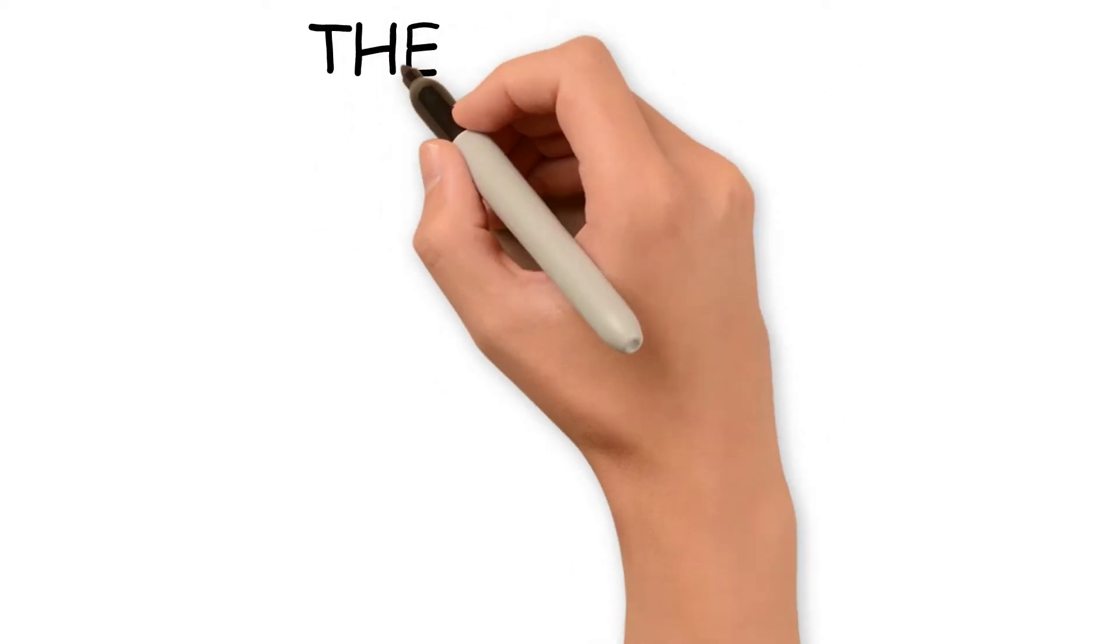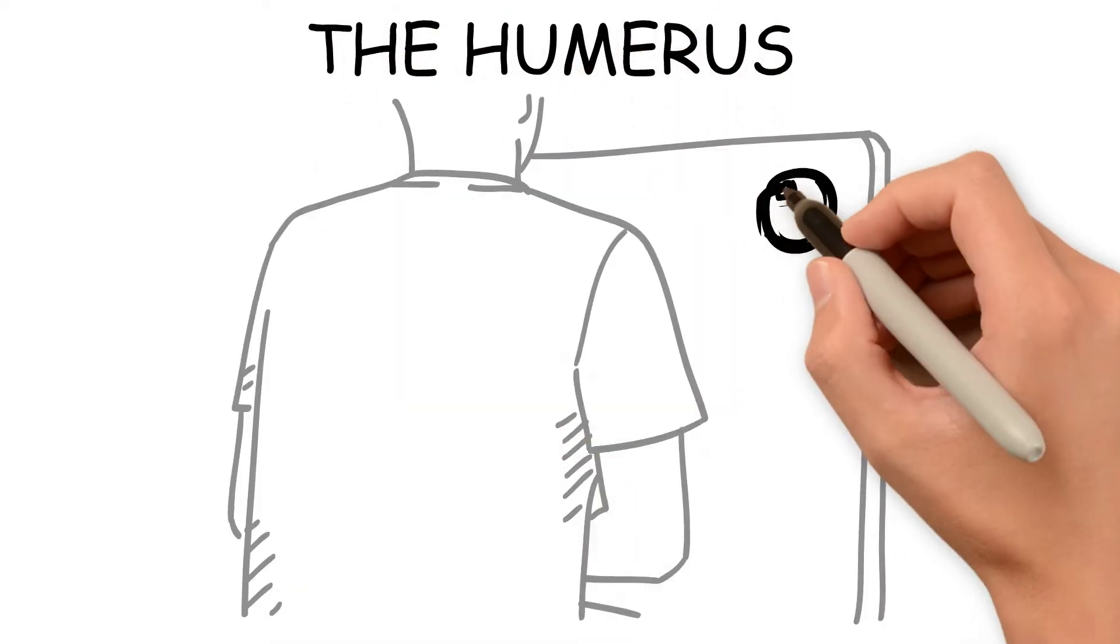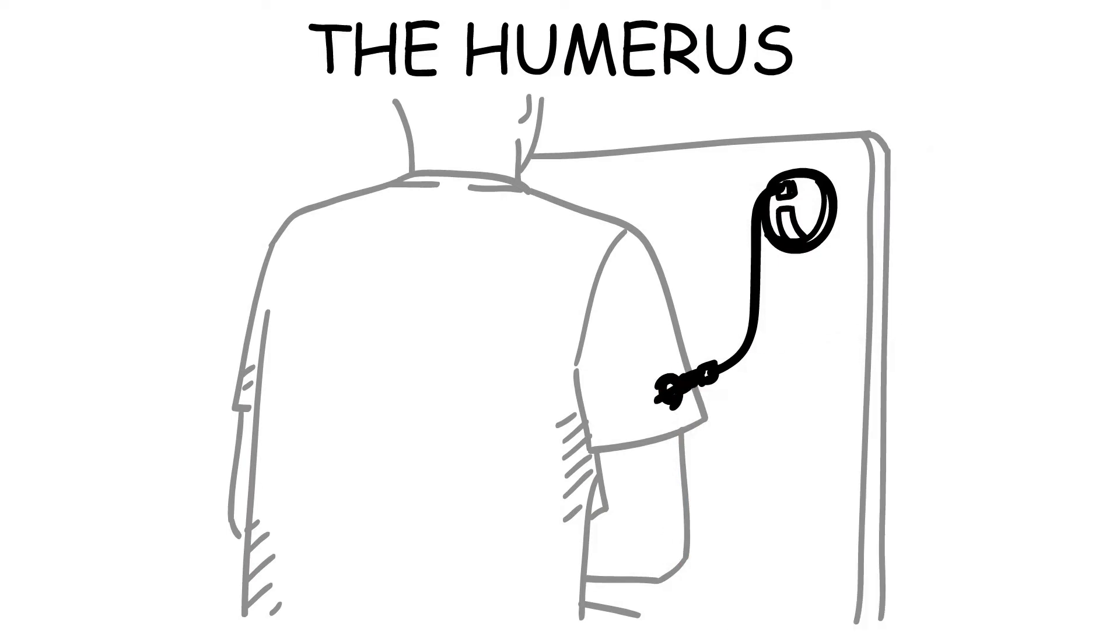Marker is placed on the posterior side of the upper arm midway between the lateral and medial surfaces of the limb.